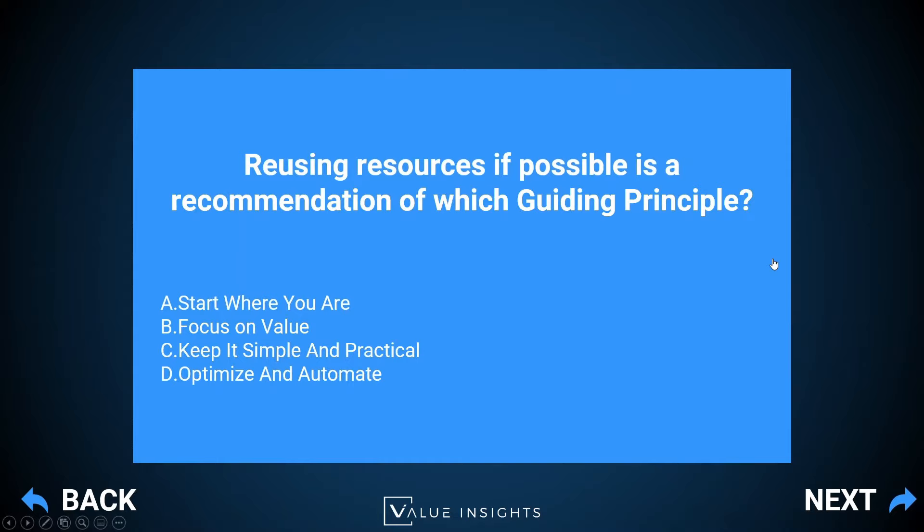The other options: focus on value says we should understand our stakeholders and what is important to them. Keep it simple and practical says we shouldn't overachieve but simply achieve what is needed by our customers and stakeholders. Optimize and automate says we should automate whatever is possible in an economical manner to maximize the value of human work — whatever can be automated should be, so we can invest our time into more value-focused activities.